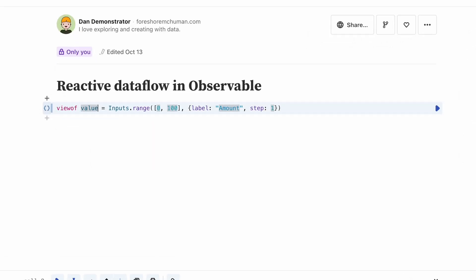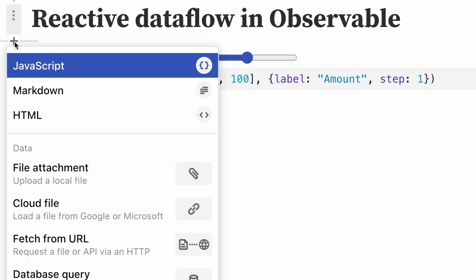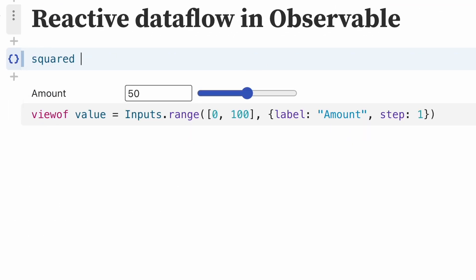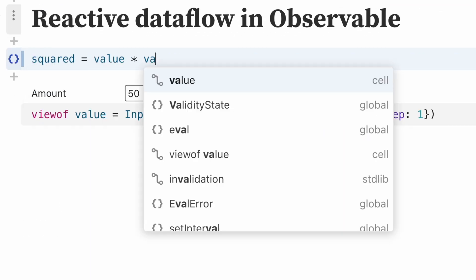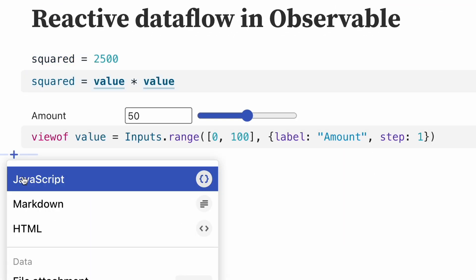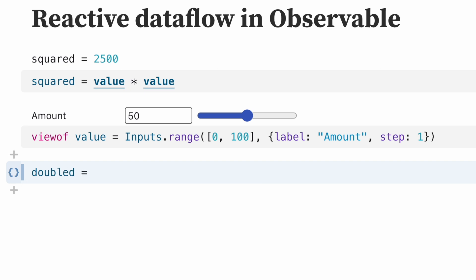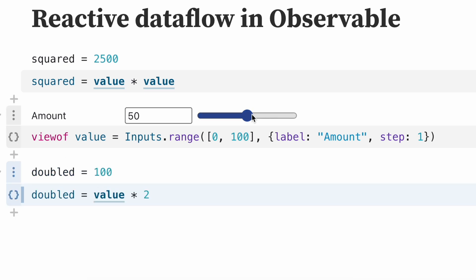The value cell here is used in two other cells, one before and one after it in the notebook. Whenever I change its value by moving the slider, both dependent cells will update.